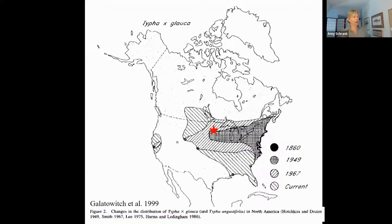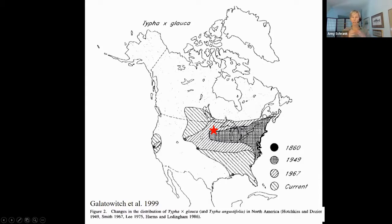This map from a paper by Galatowitsch et al. 1999 shows the distribution of hybrid and narrowleaf cattail. Around 1860, it only appeared along the eastern coast of the US. By 1949 it had spread all the way to Minnesota, and by 1967 it spread even further. It's continuing to spread today. This hybrid has been here a long time and consequently we don't always recognize it as an invasive species.